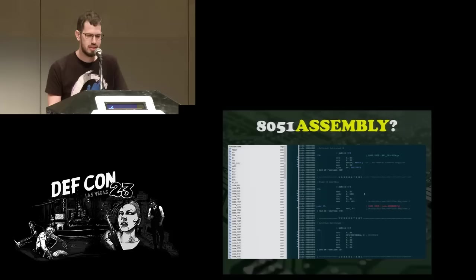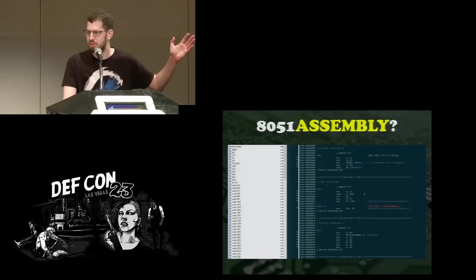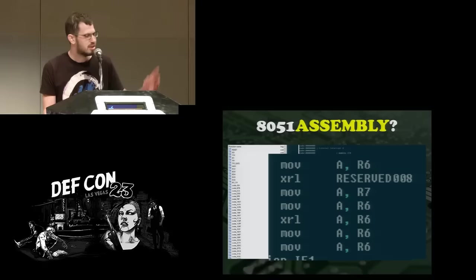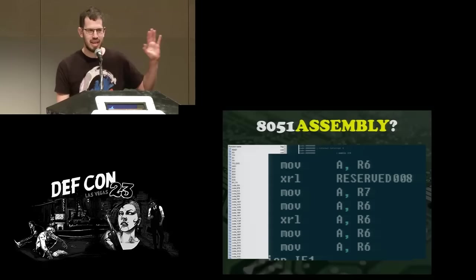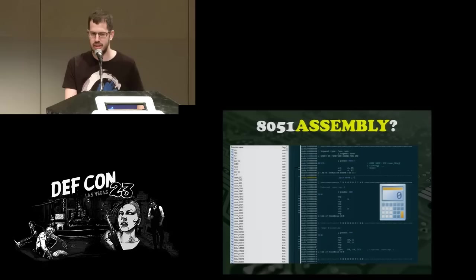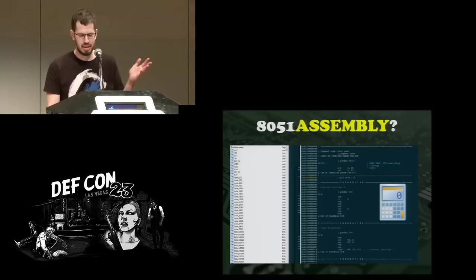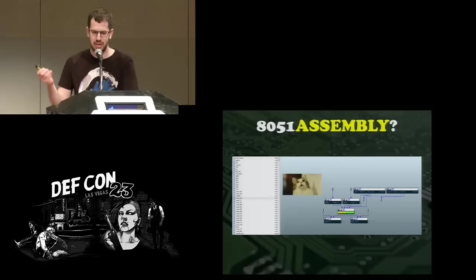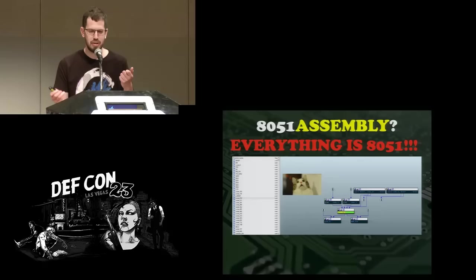When we open it in IDA, at first glance it looks really good — IDA managed to disassemble all the binary and even found all the functions. But if you take a closer look, you see something is definitely wrong: the last two lines are 'move A, R6' happening twice in a row. Maybe in 8051 you need to do everything twice — but we know something is definitely wrong. So we took a calc.exe binary and opened it up in IDA as 8051 assembly, and got the same picture. And of course calc.exe is not an 8051 binary, it's x86. We then realized that if you believe hard enough, everything can look like 8051 assembly.